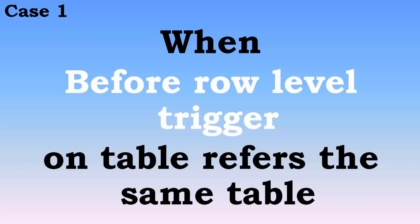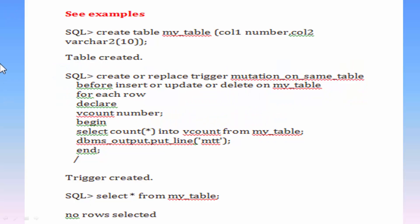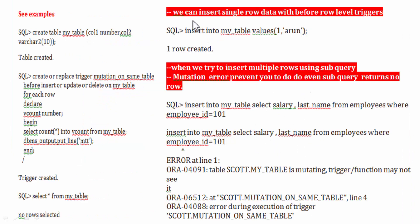Case 1: when a before row-level trigger on a table refers to the same table. Here we create one table with two columns, and on this table we create one trigger. The trigger simply tries to fetch how many records are inside the table. The table name is 'my_table' and we are trying to fetch records from the same table on which we are creating the trigger.